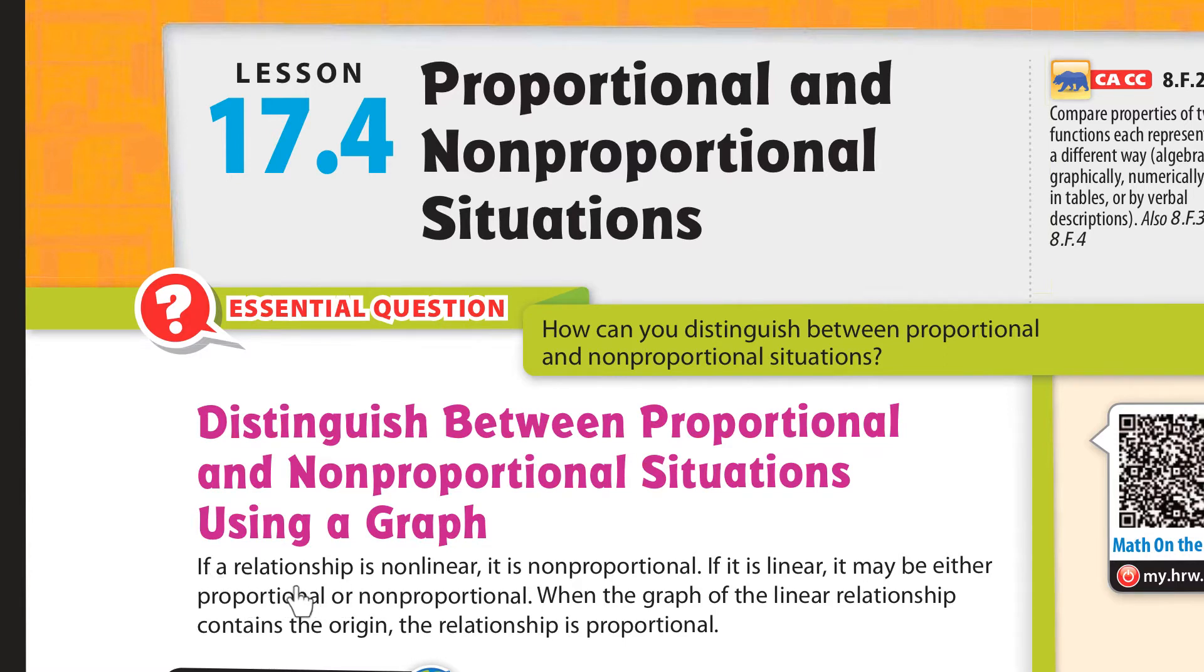If a relationship is non-linear, so if it's not straight, it's non-proportional right off the bat. If it is linear, which means if it's a straight line, it may be either proportional or non-proportional. But when the graph of a linear relationship contains the origin, then it's always proportional.